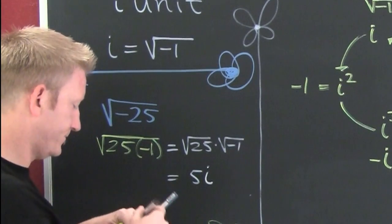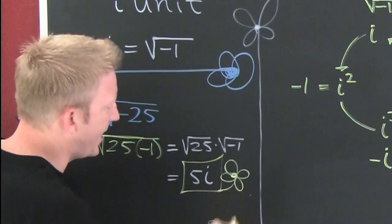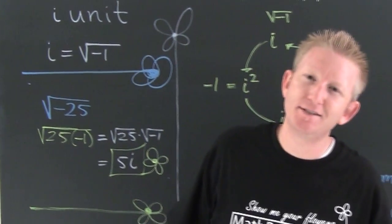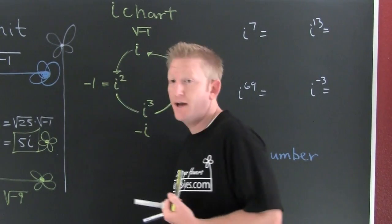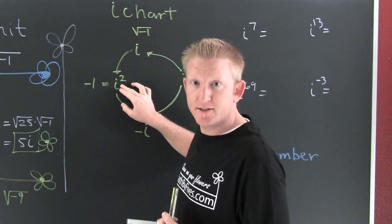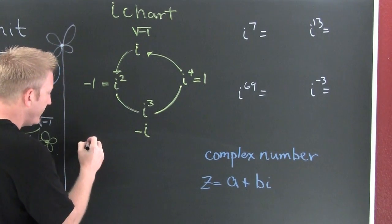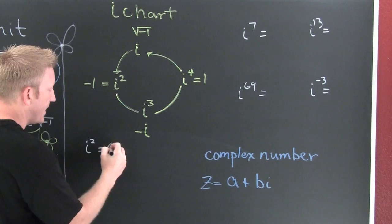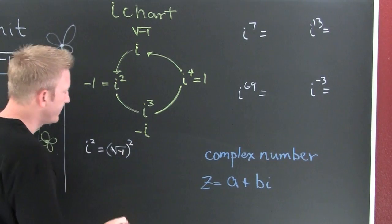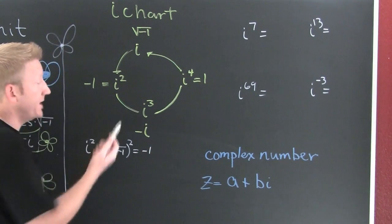Let's talk about my i chart. We talked about i being the square root of minus 1. We're looking to see what i squared is. Let's figure this out. If we had i squared, that's the same thing as the square root of minus 1 squared. What's the square root squared? That thing is the radicand—that's minus 1. And that's how we get i squared to be minus 1.